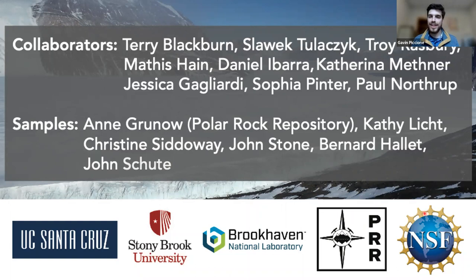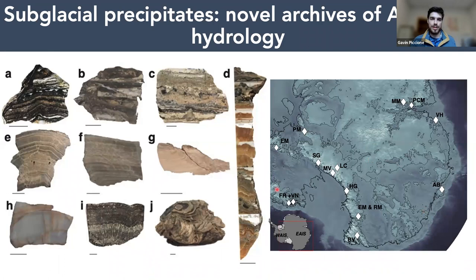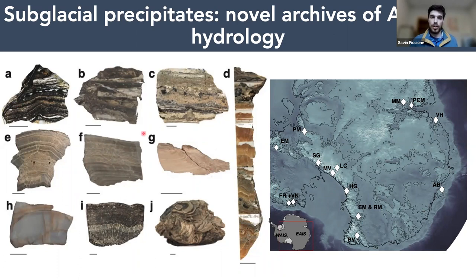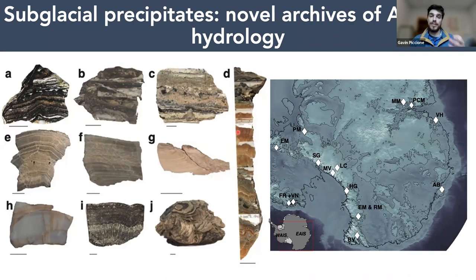The best place to start is with the stars of the show: the subglacial precipitates. What are subglacial precipitates? These are chemical sedimentary rocks forming in aqueous environments at the base of the Antarctic ice sheet. I show here a small collection of some of the precipitates we're working on to show you the different morphologies. Samples A through D are made of calcite and opal in varying layers, and some of the other precipitates are mostly calcite with finely laminated layers. This is all a function of the subglacial environments where they form.